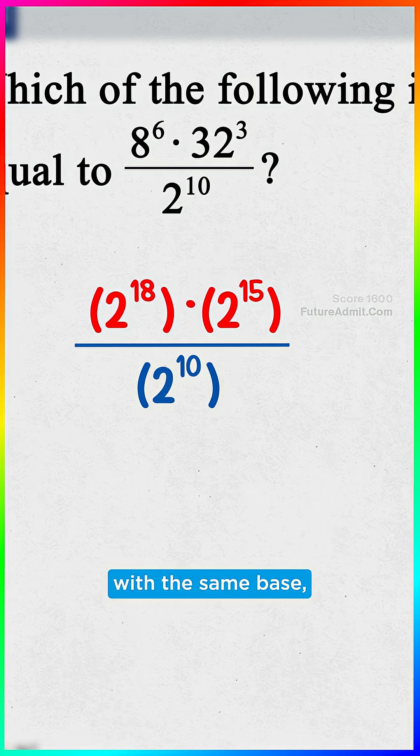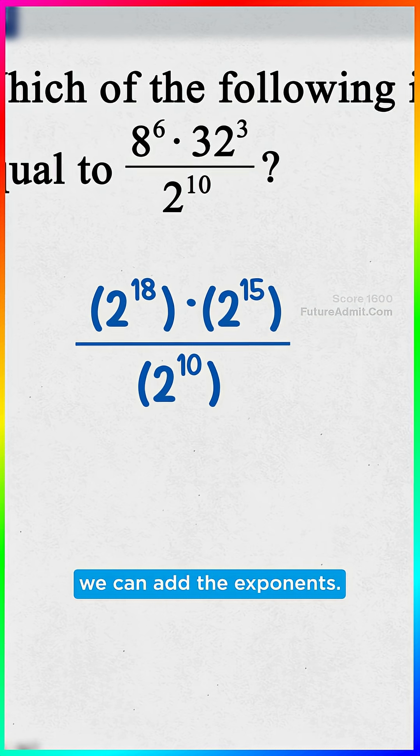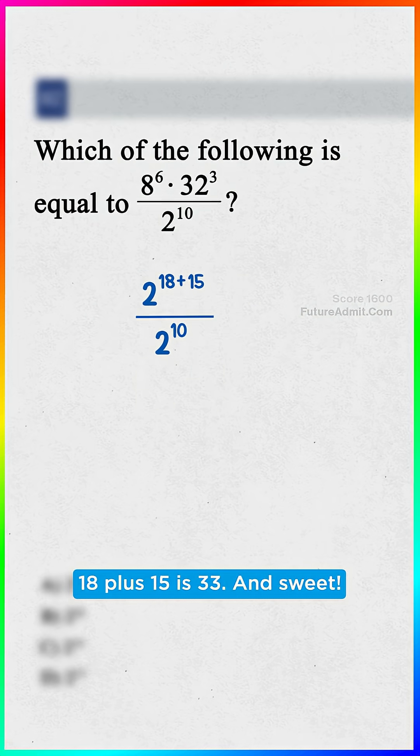Now, looky here. When we multiply with the same base, we can add the exponents. 18 plus 15 is 33.